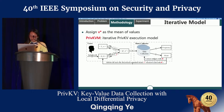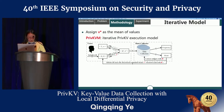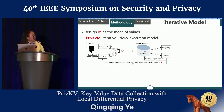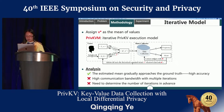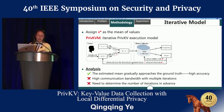To improve the accuracy, we propose an iterative model, Private KVM, which assigns the value as the mean of all values. We add steps 6 and 7 as feedback to improve accuracy. In this model, the output mean of the previous iteration becomes the assigned value of the current iteration, so that the mean estimation will gradually approach the ground truth. With multiple iterations, this approach improves accuracy of mean estimation. However, it also comes with high communication bandwidth as multiple interactions between users and the data collector are needed.